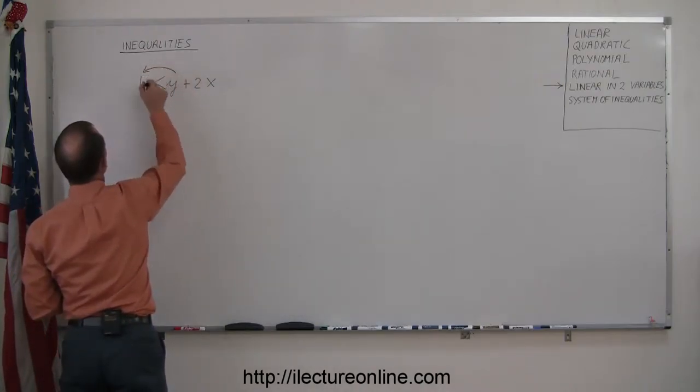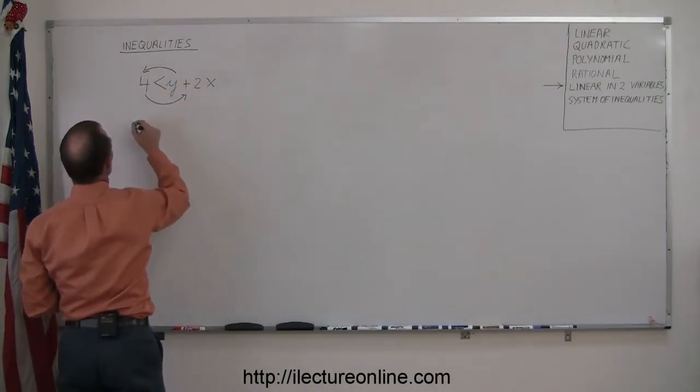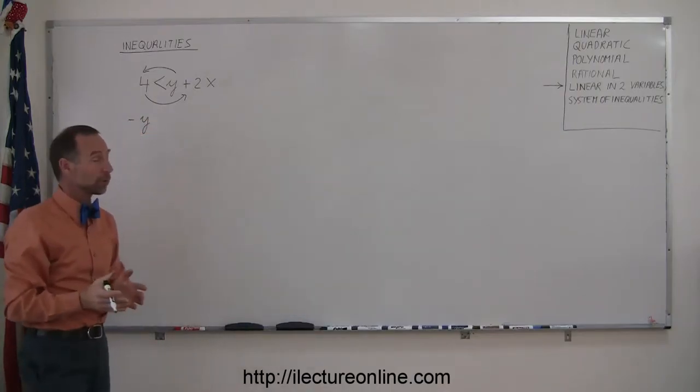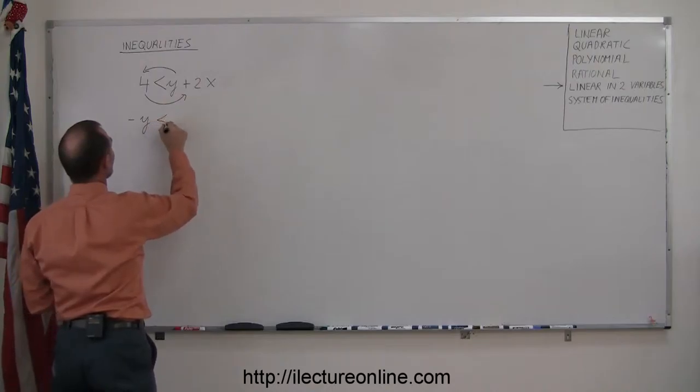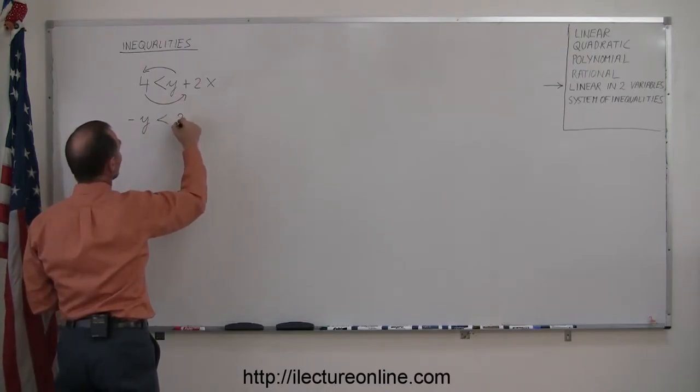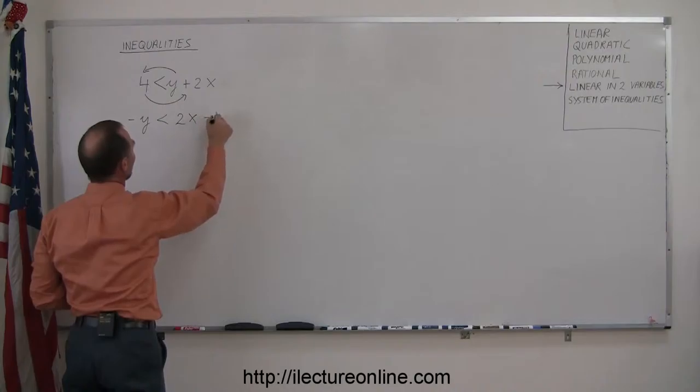I'm going to move the y over here and the 4 this way. So this becomes a minus y. Just like with an equation, when you cross the inequality sign, the sign changes. So you get a minus y is less than, write the 2x first, and then when the 4 goes across, it becomes a minus 4.